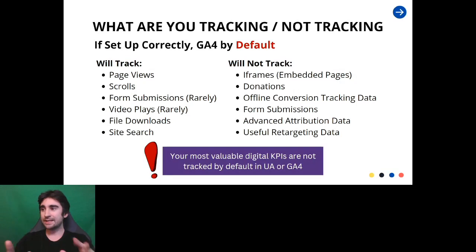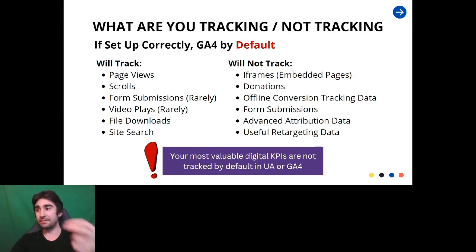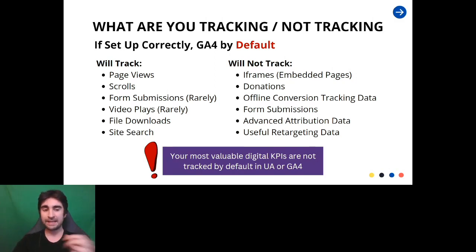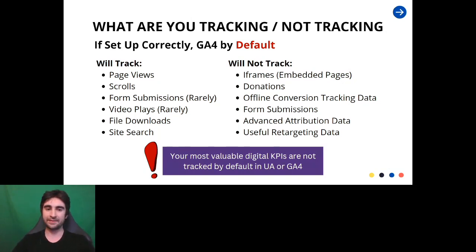Let's take a look at what we're tracking by default in Google Analytics 4. When you set up the HTML snippet into your website and install GA4, here's what you track by default: page views, scrolls, sometimes form submissions — but it usually doesn't work — video plays, file downloads, and site search. Now, if that list seems relatively unimpressive, it's because it is relatively unimpressive.